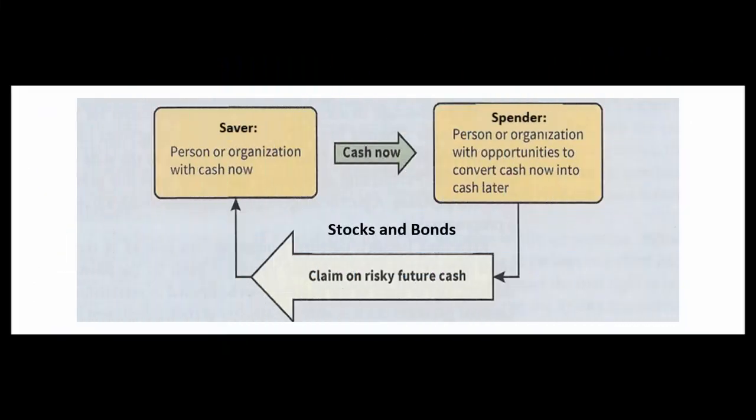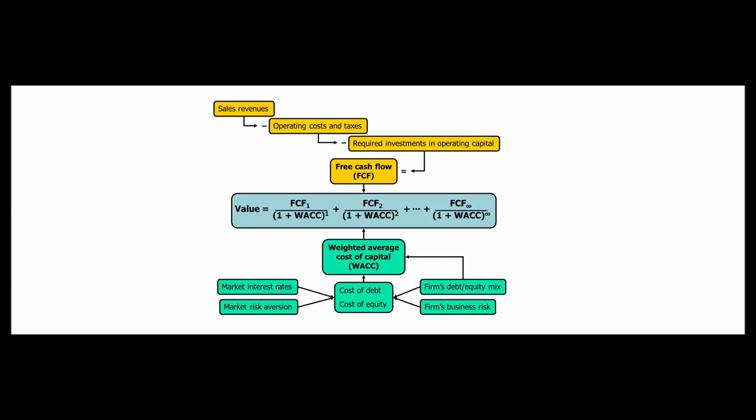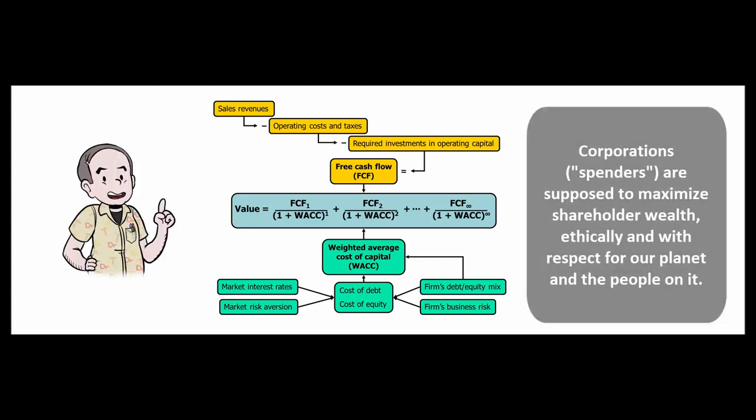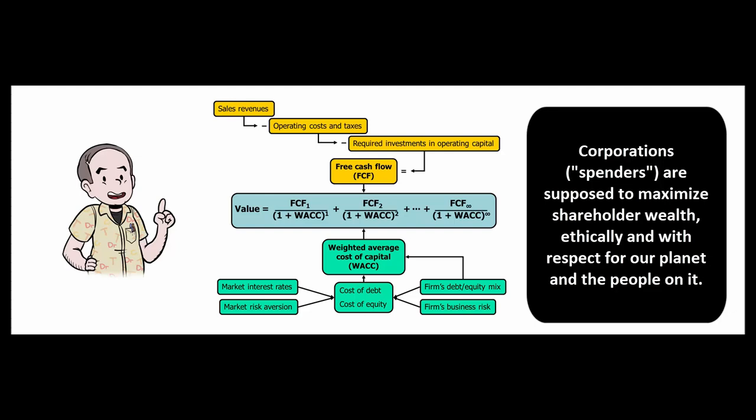Big picture: savers are moving money to spenders who invest it in corporations. The management of the corporation's job is to maximize shareholder wealth — one way to do that is to increase free cash flow so that the present value of those future free cash flows is as high as possible, and to do so ethically and with respect for our planet and the people on it.